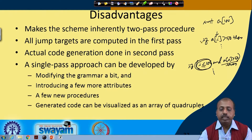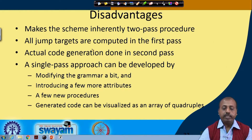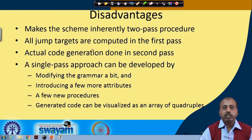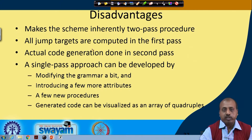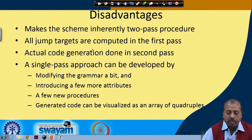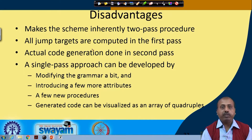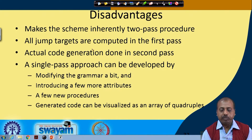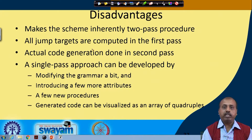However, the way we are generating code has problems because it makes the scheme an inherently two-pass procedure: in the first pass all jump targets are computed, and in the second pass the actual code generation is done. B.true and B.false destinations are calculated before code is generated, which is a bit cumbersome. So there is a modification to the grammar that can make it a single-pass approach, by modifying the grammar a bit and introducing a few more attributes.